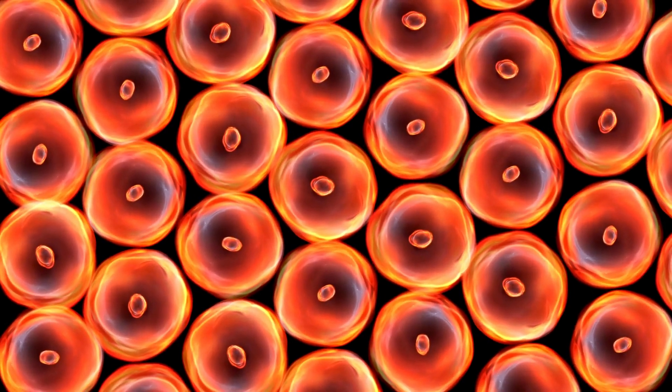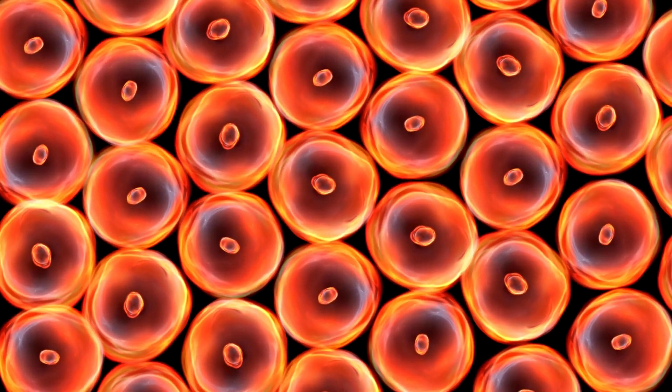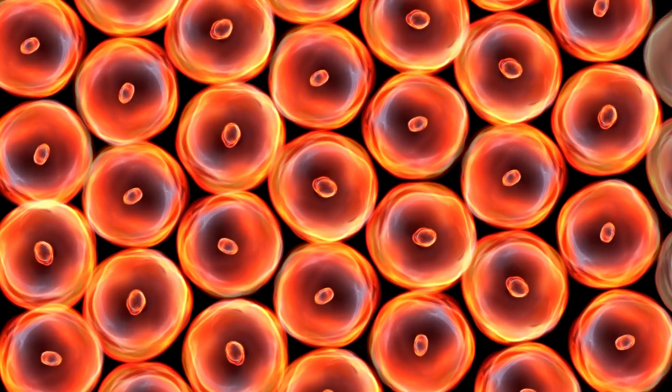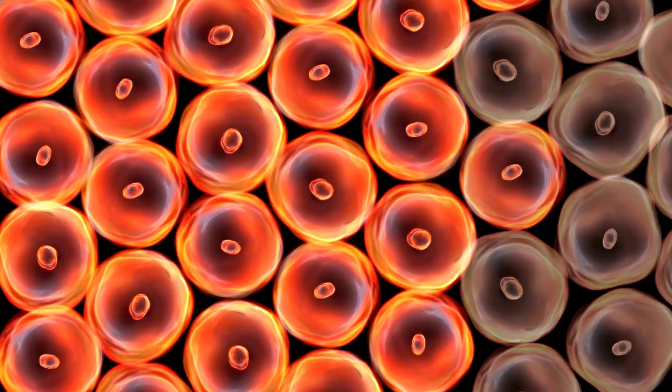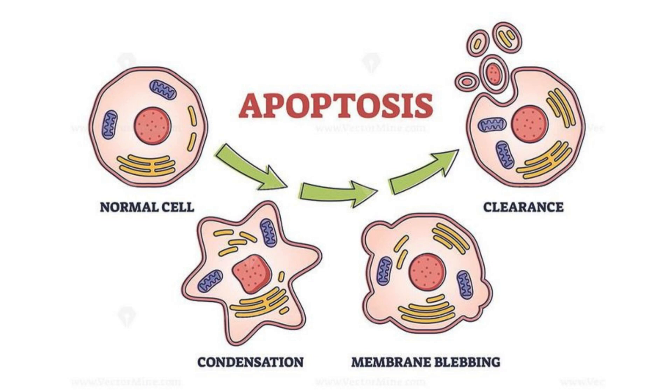Apoptosis occurs in several stages, during which the entire cell turns into many small apoptotic bodies, which then serve as food for normal cells. This is a normal, natural process.